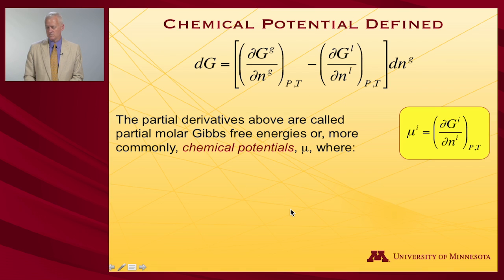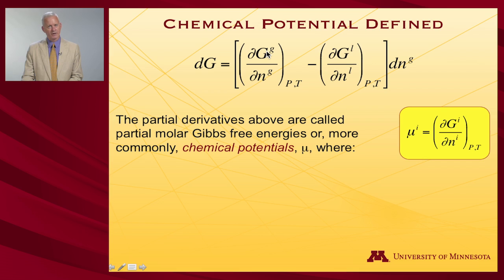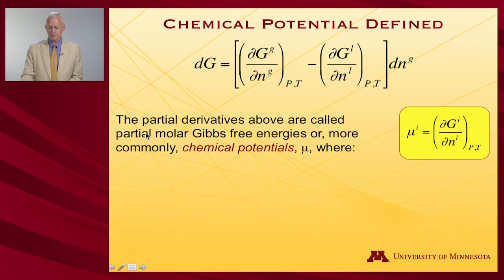The chemical potential is defined as the change in the free energy with respect to the change in the number of particles at constant pressure and temperature, when we're talking about the Gibbs free energy. You can also call this a partial molar Gibbs free energy — that's a mouthful — so chemical potential is the more commonly used phrase.